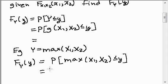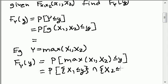And then we'd try to determine what needs to happen for X1 and X2 so that the maximum of the two is less than or equal to y. Well, here we'd see that we need both X1 to be less than or equal to y and we need X2 to be less than or equal to little y.